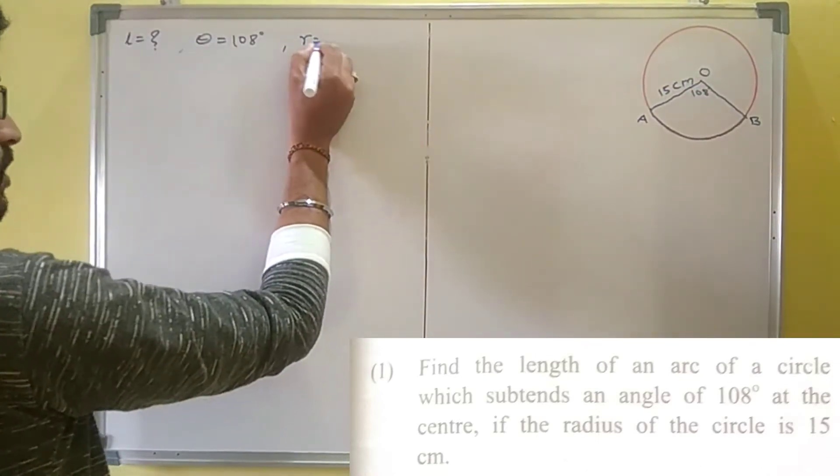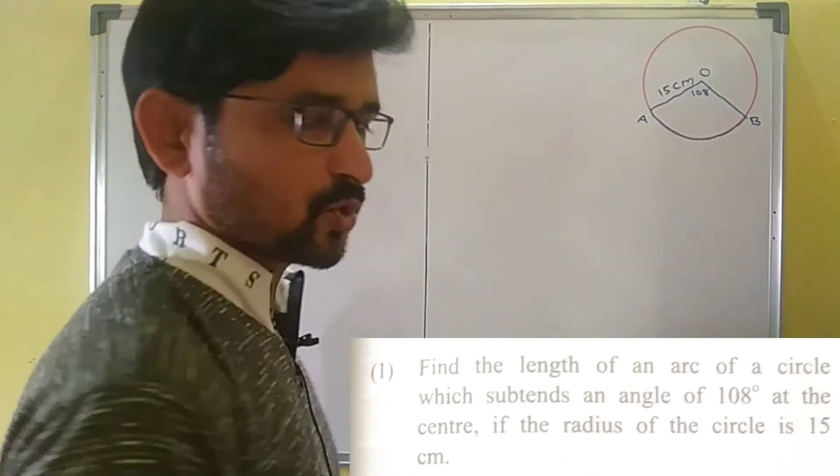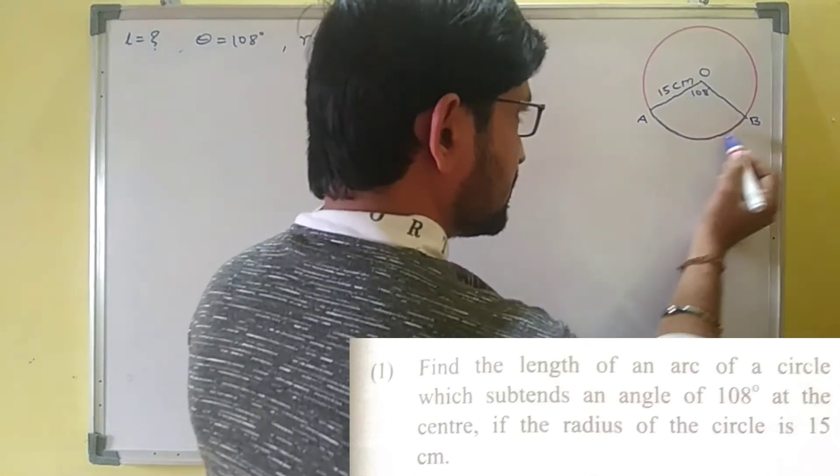Now write here R is equal to 15 centimeters. So we need to calculate the arc length, and what is given is the central angle 108 degrees and the radius value.